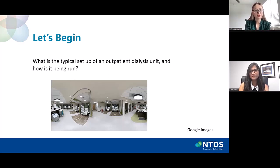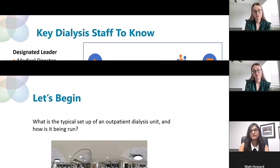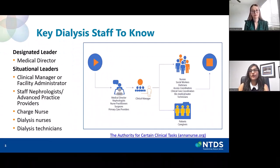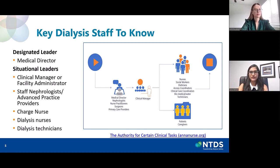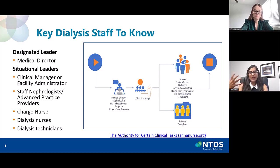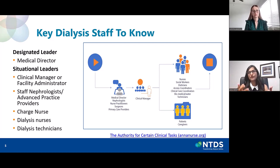What is the typical structure of the outpatient dialysis unit and who is in charge? Dialysis units are normally overseen by a medical director who's a nephrologist by training, and they're responsible ultimately for all the policies and procedures that a clinic follows. There is also a clinic manager or facility administrator overseeing that particular dialysis unit. There are staff nephrologists and advanced practice providers like nurse practitioners and physician assistants who round in dialysis units, typically four times a month.